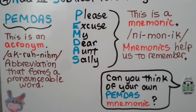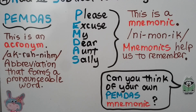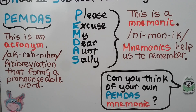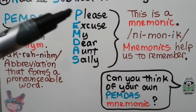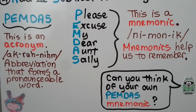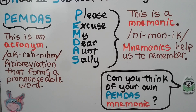For many years, people have used PEMDAS to remember the order of operations: Parentheses, Exponents, Multiply, Divide, Add, Subtract. This is called an acronym — it's when an abbreviation forms a pronounceable word. For decades, people have used "Please Excuse My Dear Aunt Sally" to remember PEMDAS. This is called a mnemonic, and mnemonics help us to remember. Can you think of your own PEMDAS mnemonic — a sentence using P-E-M-D-A-S that will help you remember?